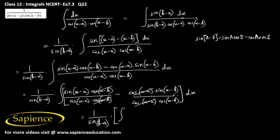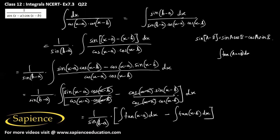So this will be 1 by sin(b minus a) into the integral. Since sin theta over cos theta is tan theta, we can write it as tan(x minus a) dx minus the integral of tan(x minus b) dx. We know that the integral of tan(ax plus b) dx equals 1/a log|sec(ax plus b)| plus c, or equivalently minus 1/a log|cos(ax plus b)| plus c.